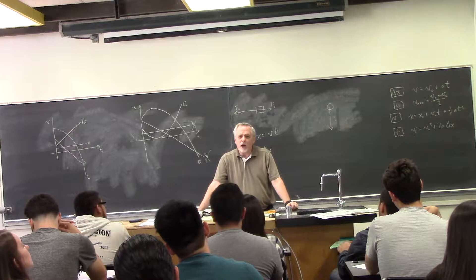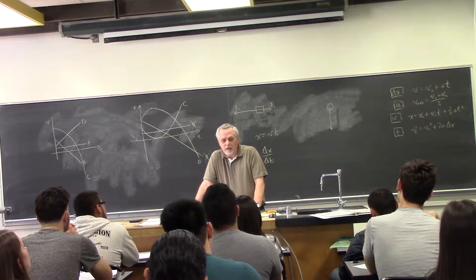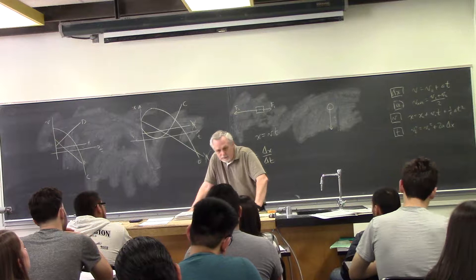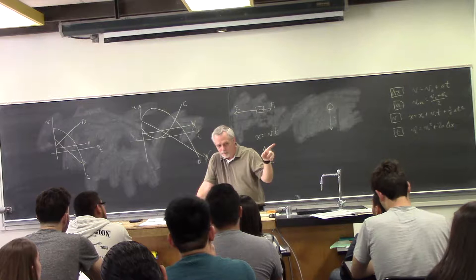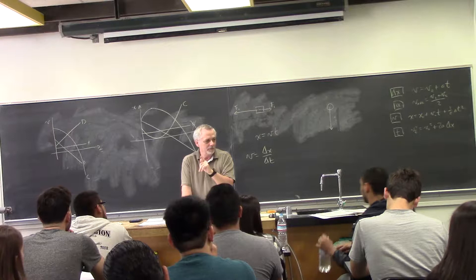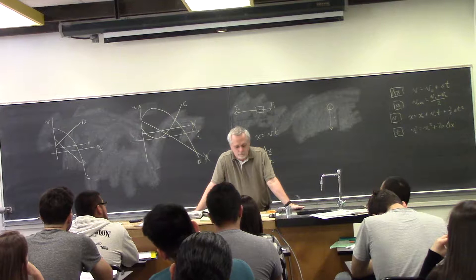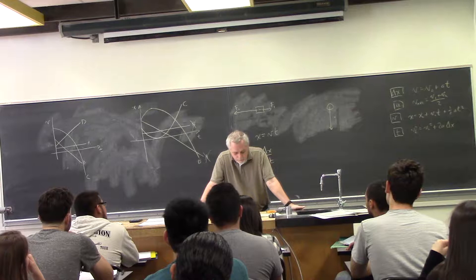An object cannot remain at rest unless — let's first answer under what conditions this is possible. An object cannot remain at rest unless the net force acting on it is zero. If the net force is zero, it isn't necessarily at rest, but if it is at rest, the net force is necessarily zero. An object cannot remain at rest if there are no forces acting on it at all — not necessarily; it could be moving, just not accelerating.